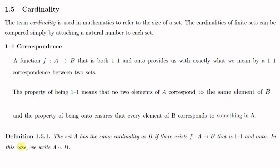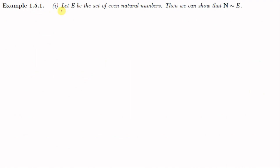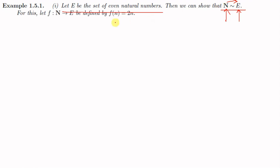Now we shall see some examples. Let E be the set of even natural numbers. We can show that N ~ E, meaning N and E have the same cardinality. Here N represents the set of natural numbers and E represents the set of even natural numbers. To show that N ~ E, we need to show there exists a function f from N to E which is one-to-one and onto.